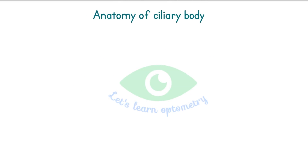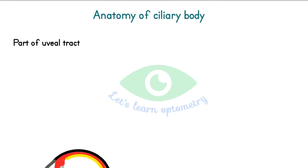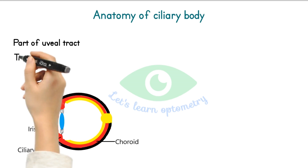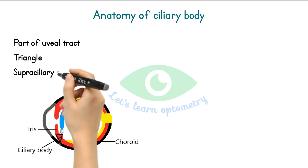Anatomy of ciliary body. The ciliary body is a part of the uvea or uveal tract. The uveal tract consists of three parts: the iris, the ciliary body, and the choroid. The ciliary body is located between the iris and the choroid. On cross section, it has the shape of a triangle whose apex is close to the choroid and the base is close to the iris. It attaches to the sclera externally, creating a potential space called the supraciliary space.